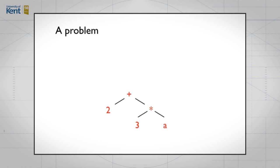That's it, except we missed out one of the cases in our definition. What if I try to evaluate an expression like this: 2 plus 3 times A? What value does that have? I don't know, because I don't know what value A has.